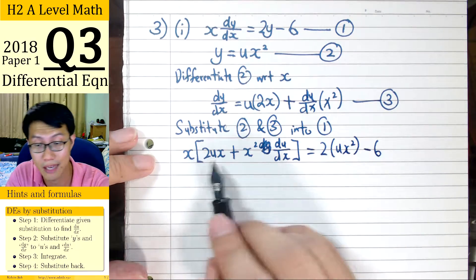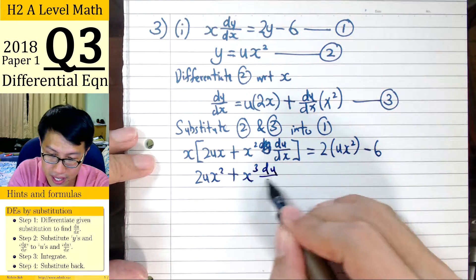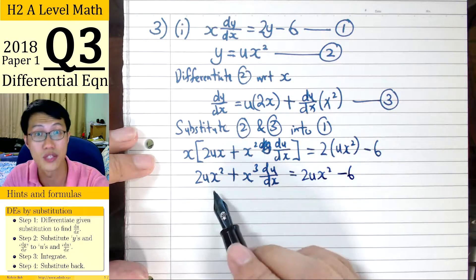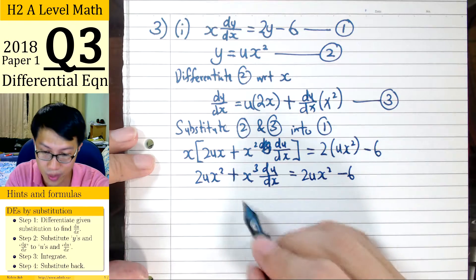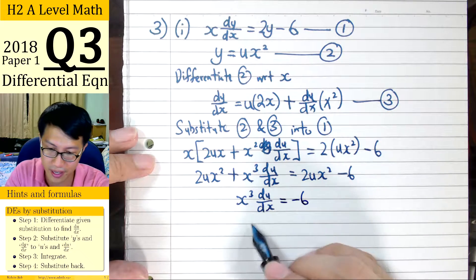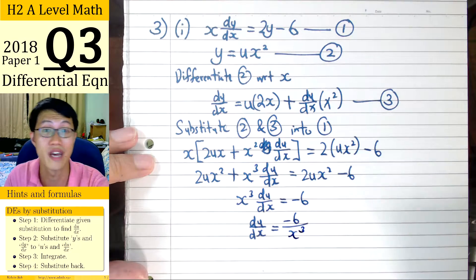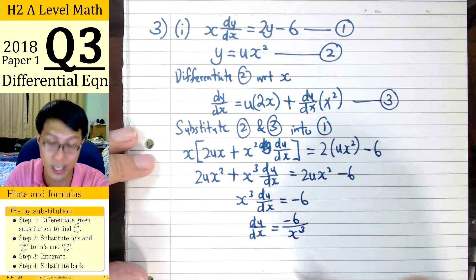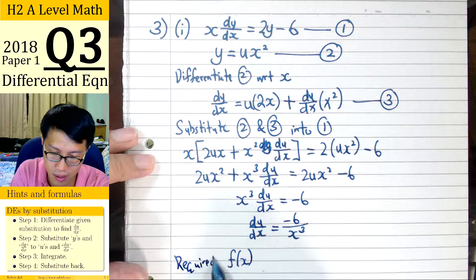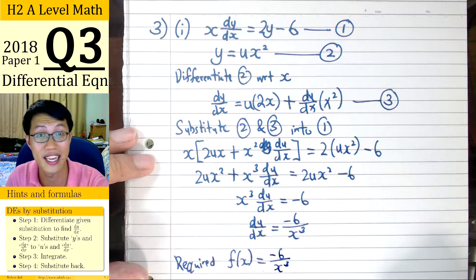Simplifying by expanding: x times 2ux gives us 2ux squared, plus x cubed du/dx equals 2ux squared minus 6. Notice the 2ux squared term cancels on both sides, leaving us with x cubed du/dx equals minus 6. Making du/dx the subject, we have du/dx equals minus 6 over x cubed. This answers Part 1 of the question — the required f(x) is minus 6 over x cubed.